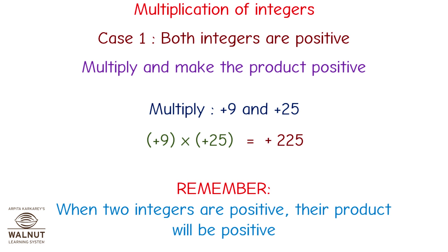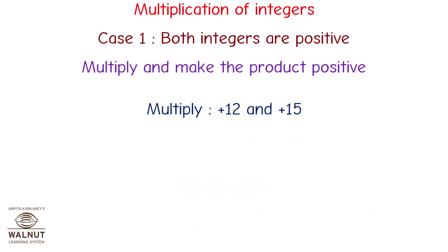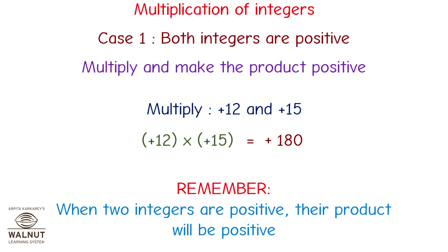Remember, when two integers are positive, their product will be positive. Multiply plus 12 and plus 15. Plus 12 multiplied by plus 15 is equal to plus 180. We multiply the numbers directly and get the answer. Since both numbers are positive, the product is also positive. Remember, when two integers are positive, their product will be positive.